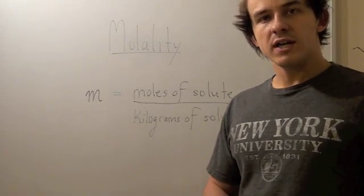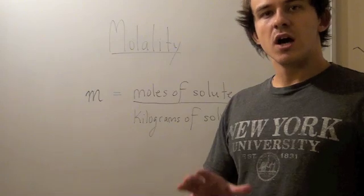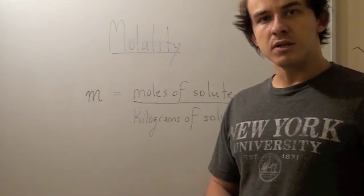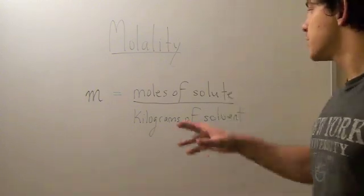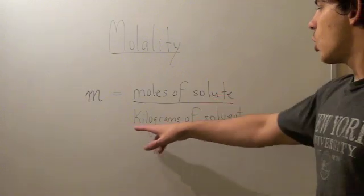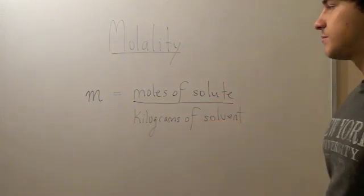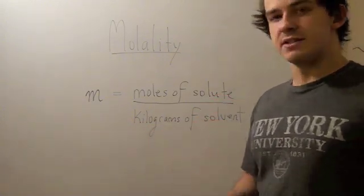Molality is simply another way of measuring the concentration of a solution. The symbol for molality is lowercase letter m, and the formula is moles of solute over kilograms of solvent. Now, let's do an example using molality.